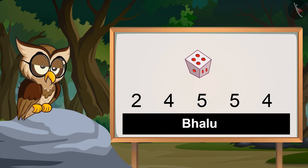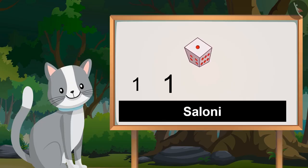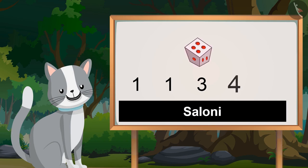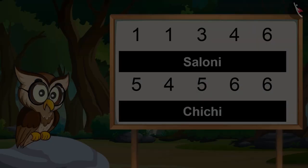So Chichi and Saloni, turn-wise roll the dice and see what numbers you get. They rolled: one, one, three, four, six, five, four, five, six, six.